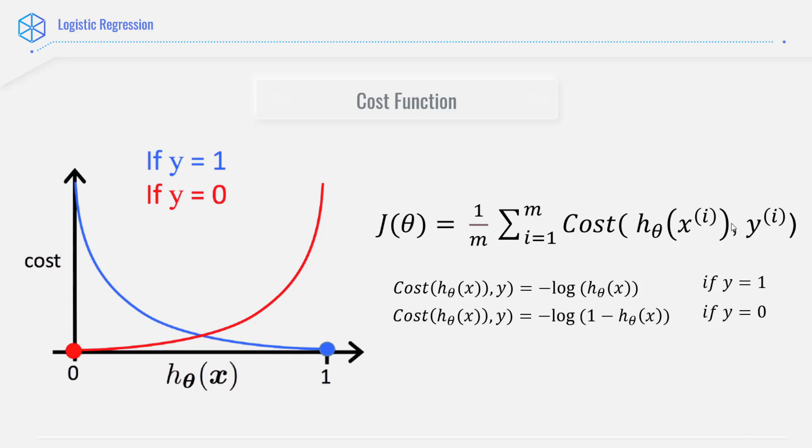And when we have y equals to 0, the cost function, in turn, this part becomes minus logarithm of 1 minus h, and that is this red line.